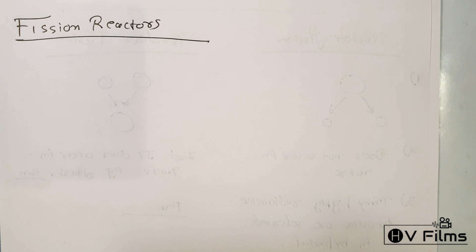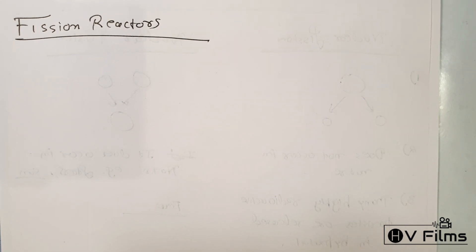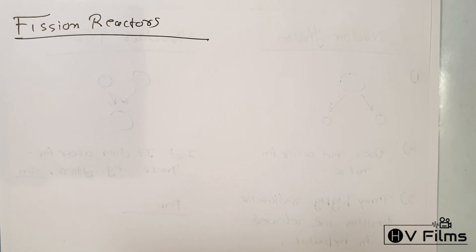The chain reaction of fission generates heat which is then used to move a turbine to produce electricity. This is the basic principle on which the working of these reactors is based.